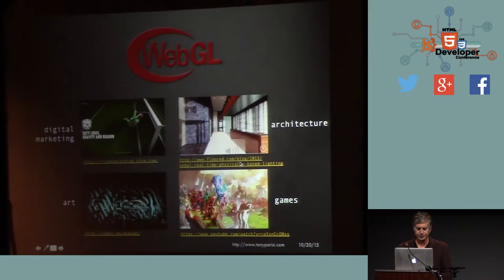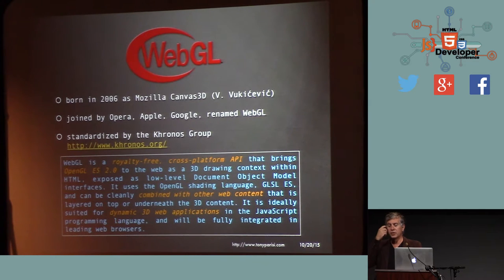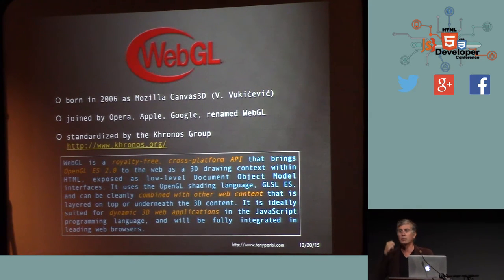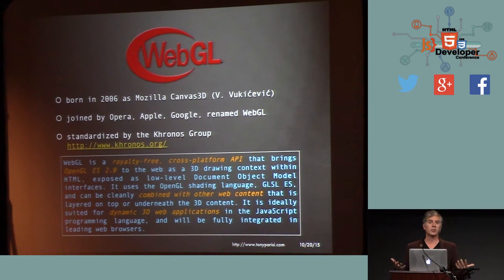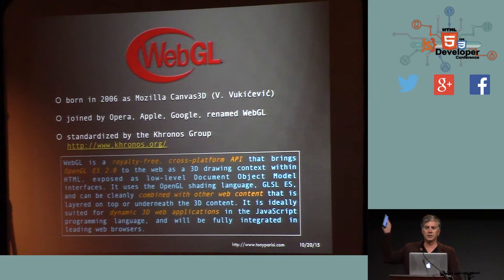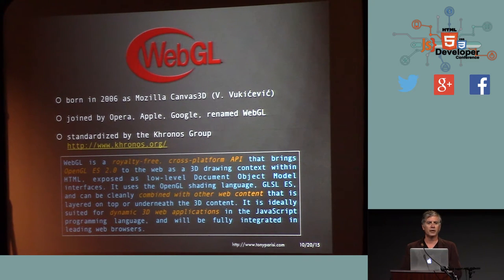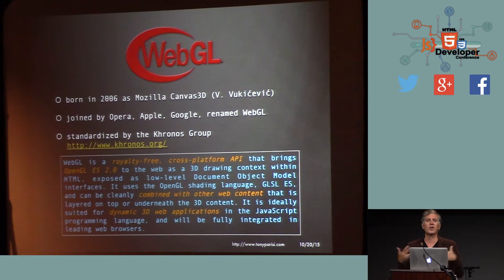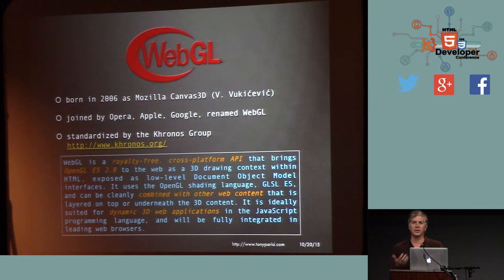A little background on the technology: it's been around since 2006. It started as something called Canvas 3D — a fellow named Vlad Vukovic from Mozilla developed it, and then Google and Safari got on board and started building it into WebKit. Then the Khronos Group, the folks who standardized OpenGL — the desktop graphics API and the API that runs on your phones — got involved, and it became a standards effort. They worked hard on making a real-time 3D pipeline that could talk to the hardware, that you could access from JavaScript and run in your web page in a secure way, where textures were web assets.